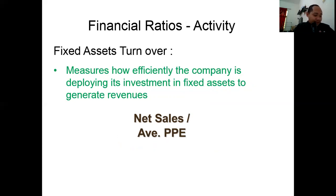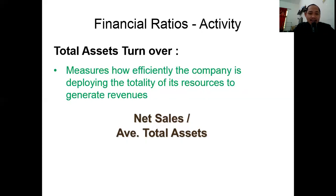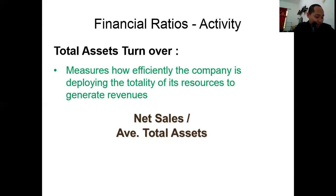In fixed assets turnover, the higher the turnover the better. Total assets turnover measures how efficiently the company is deploying the totality of its resources to generate revenues. The formula is: net sales divided by average total assets. The higher the turnover the better, as it implies effective use of assets to generate sales. Total assets turnover is always less than fixed assets turnover due to the higher denominator.